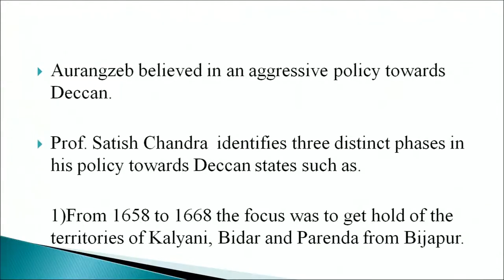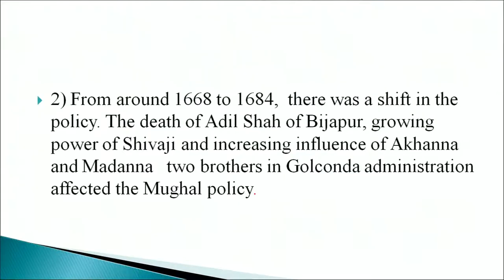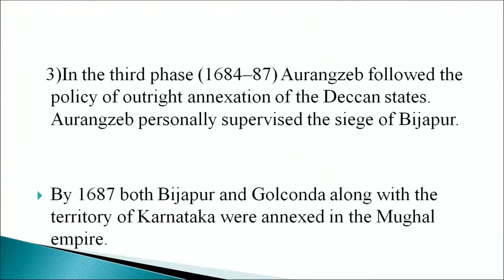Aurangzeb believed in an aggressive policy towards the Deccan. Professor Satish Chandra identifies three distinct phases: the first, from 1658 to 1668, focused on capturing the territories of Kalyani, Bidar, and Parenda from Bijapur. The picture shows Aurangzeb. The second phase, around 1668 to 1684, saw a shift in policy due to the death of Adil Shah of Bijapur, the growing power of Shivaji, and the increasing influence of Akanna and Madanna, two brothers in Golconda's administration. In the third phase, 1684 to 1687, Aurangzeb followed the policy of outright annexation of the Deccan states. By 1687, both Bijapur and Golconda, along with the territory of Karnataka, were annexed to the Mughal empire.